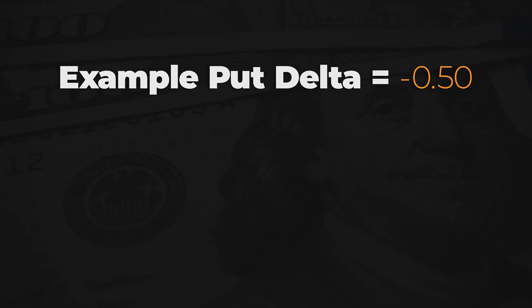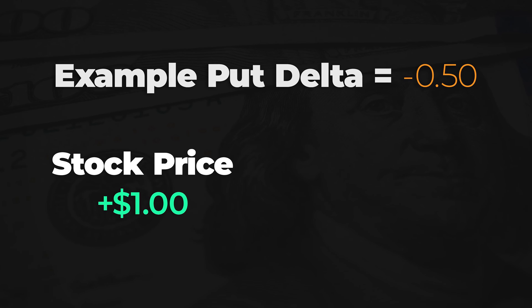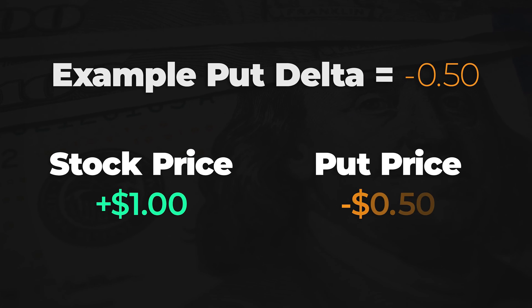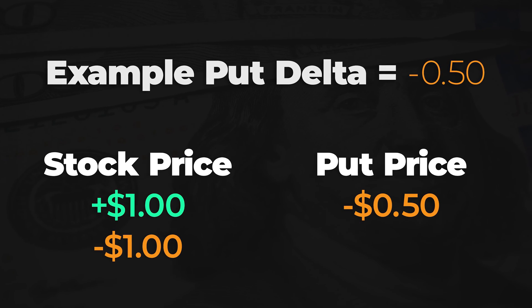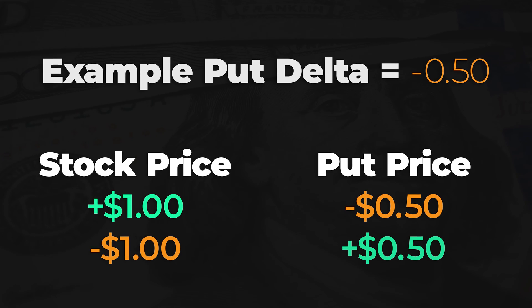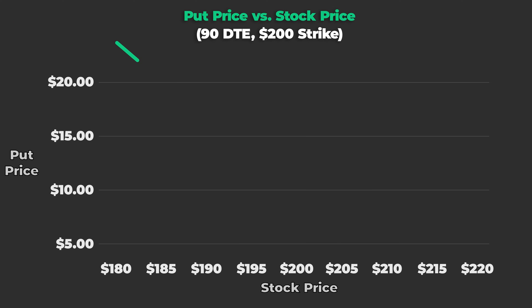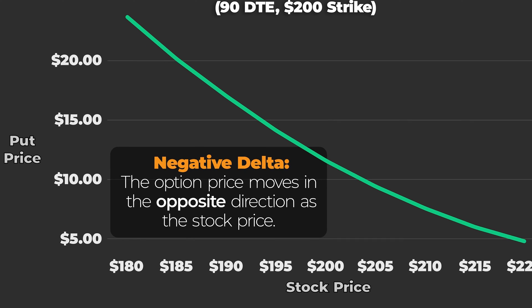Put options have negative Deltas, meaning their prices move in the opposite direction as the stock price. So if the stock price goes up, a put option's price will fall, and if the stock price goes down, a put option's price will increase. We can visualize this using an options pricing calculator: the put option's price increases as the stock price goes down, and decreases as the stock price goes up, visualizing negative Delta.